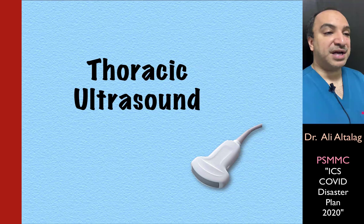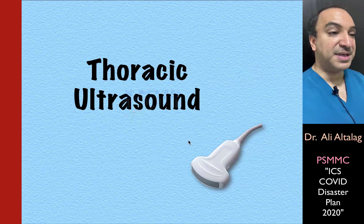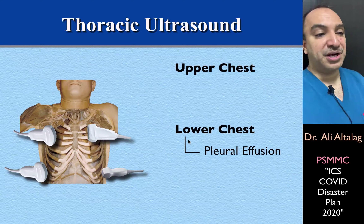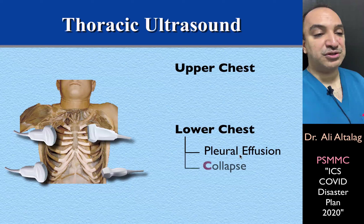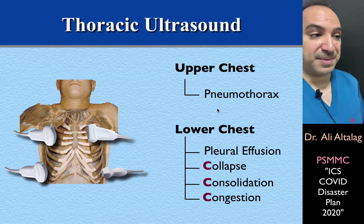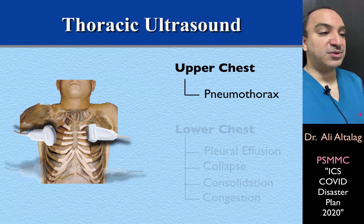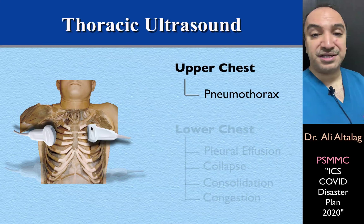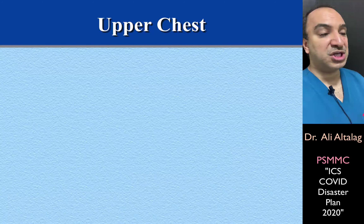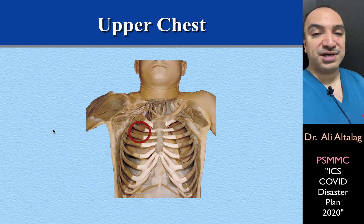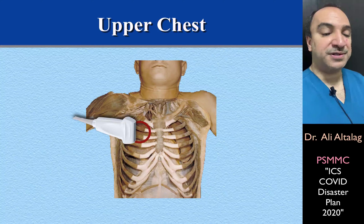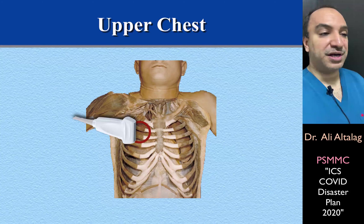Moving further to thoracic ultrasound examination. In thoracic ultrasound, we have upper-chest and lower-chest ultrasound. For lower-chest ultrasound, we look for pleural effusion, collapse, consolidation, and congestion. For upper-chest ultrasound, we look mainly for pneumothorax. We can use either the linear transducer or the curvilinear array transducer. When suspecting pneumothorax, we put our transducer initially at the second intercostal space at the mid-clavicular line and examine for certain findings, then sweep the transducer down to the costophrenic angle.